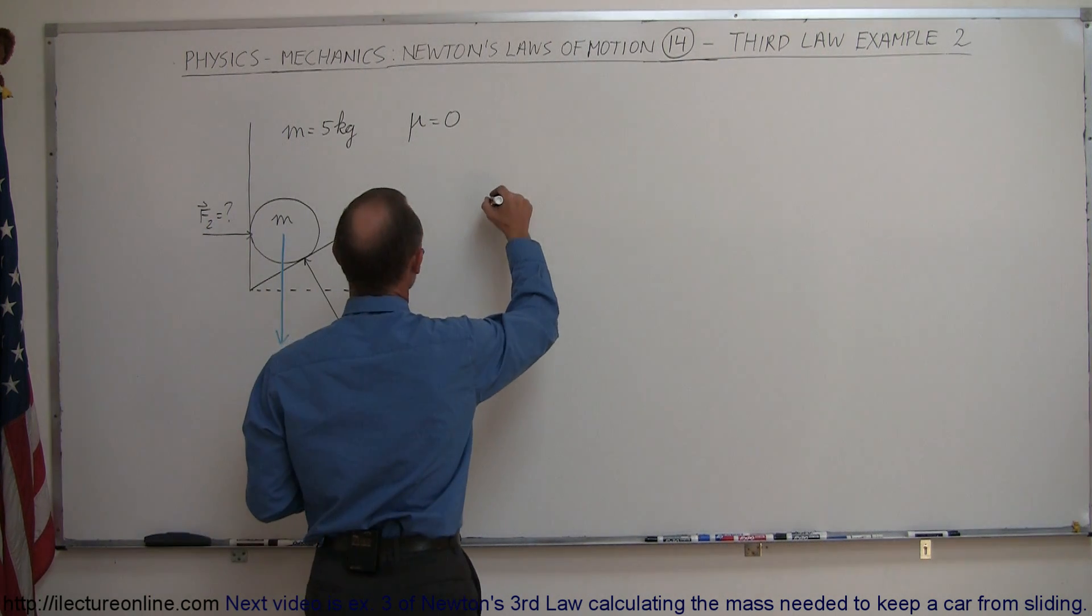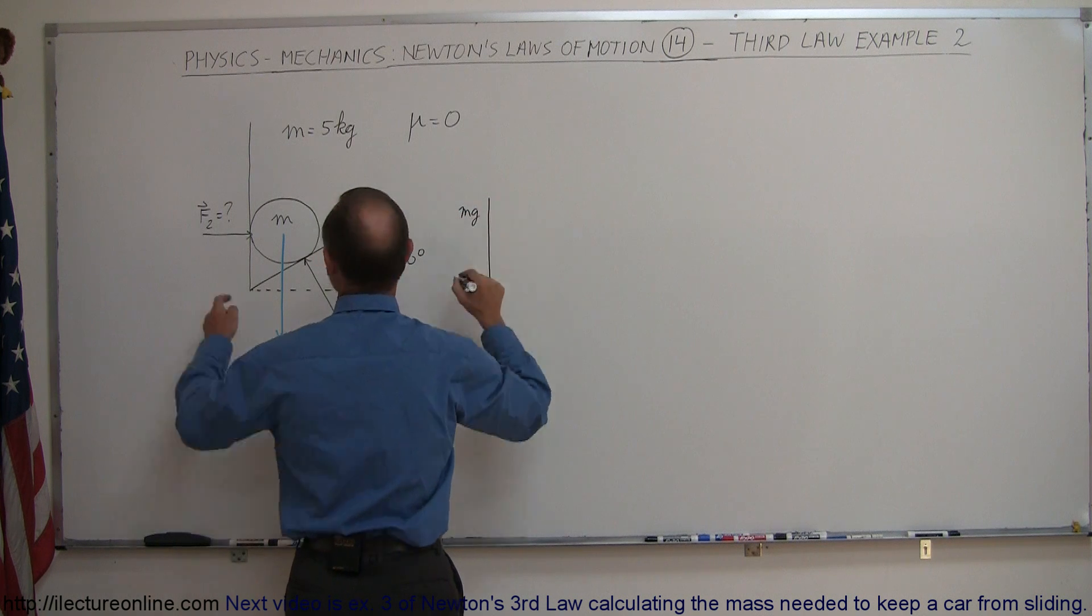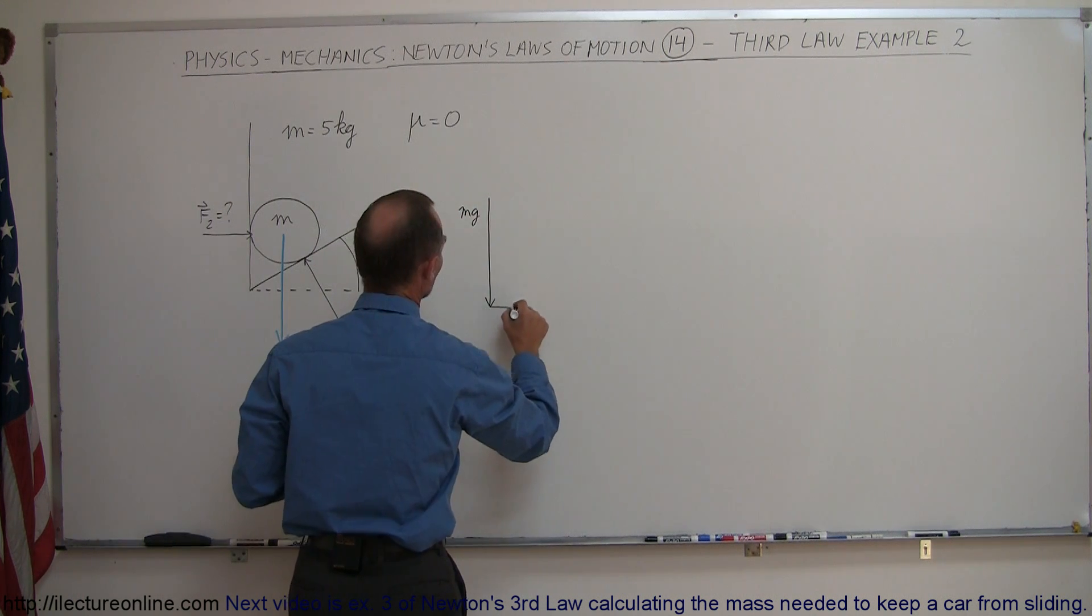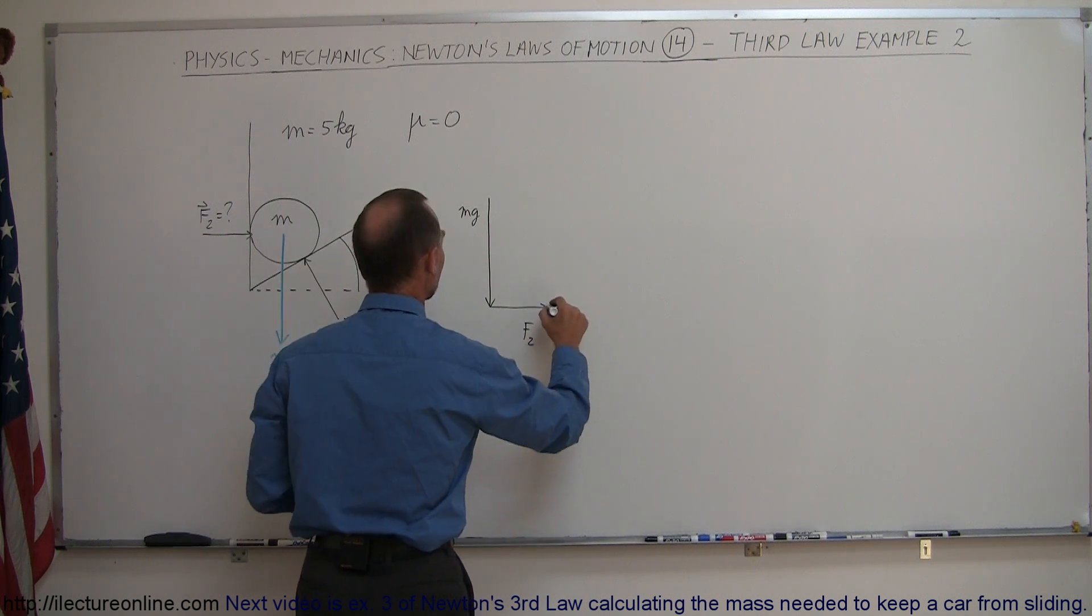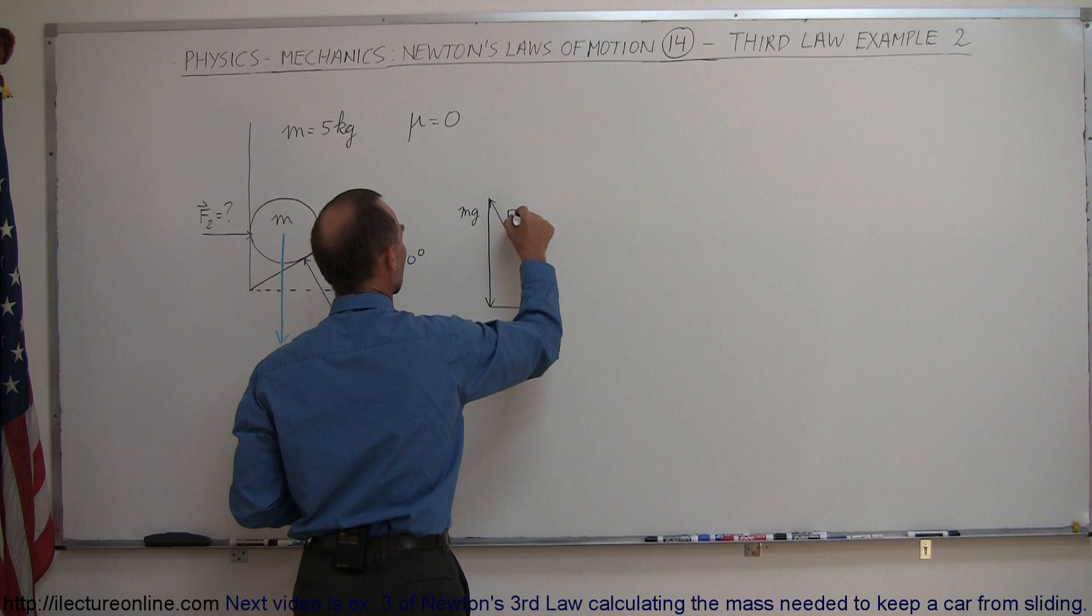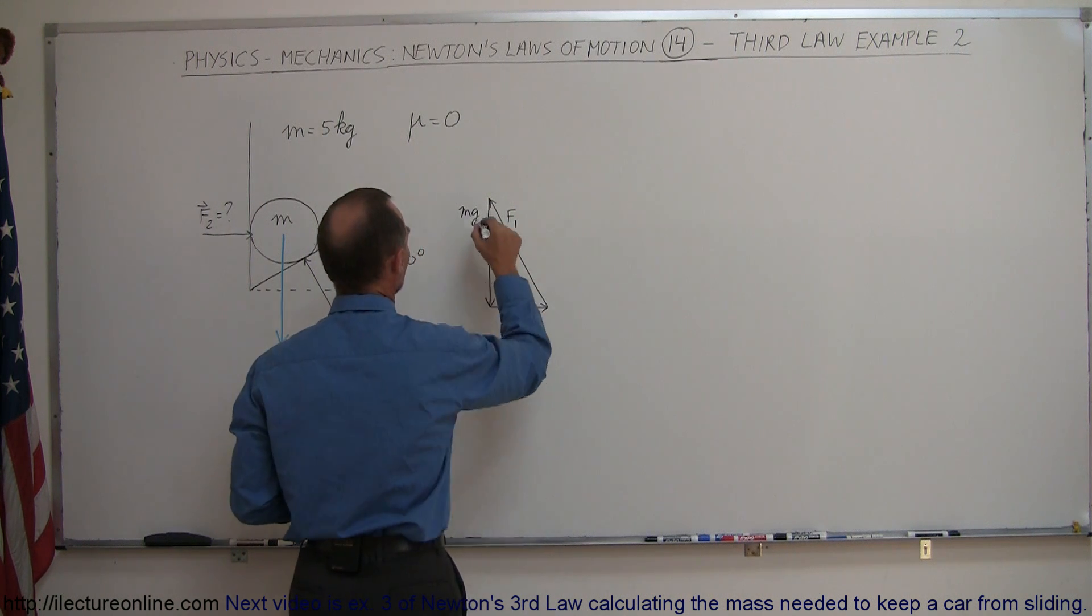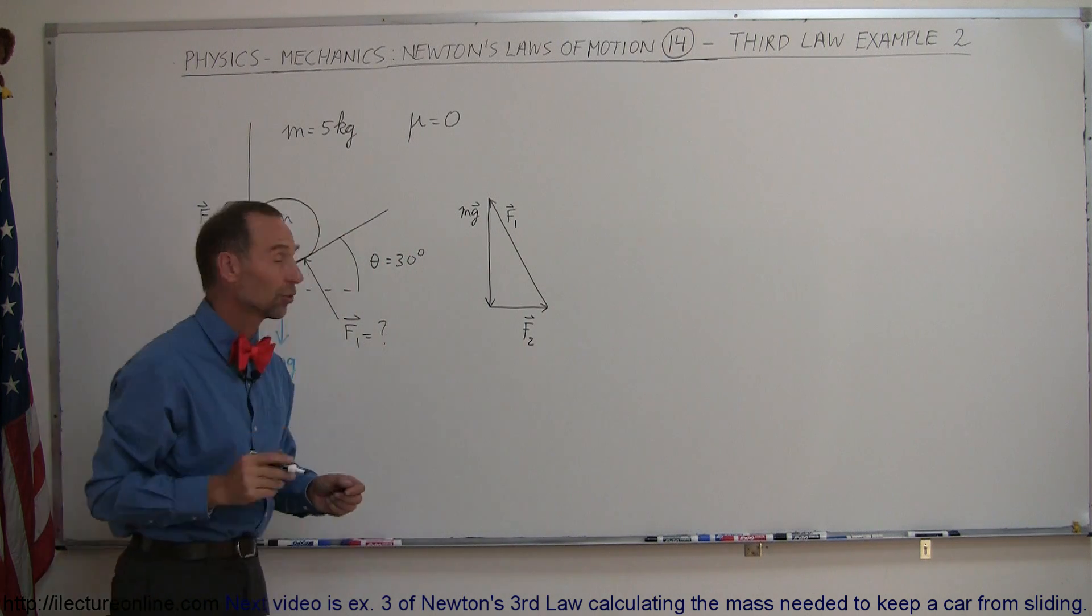If we sum them up graphically, we'll get Mg coming down this way. We have F2 in this direction, and then we have F1 in this direction. And of course, we can put arrows on that to represent that they are vectors.